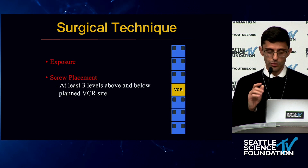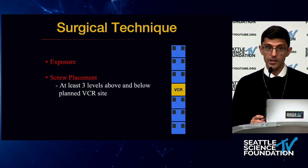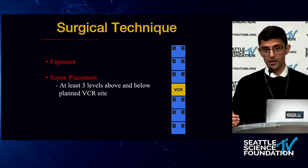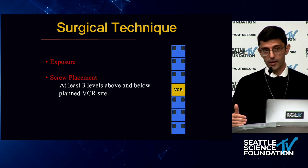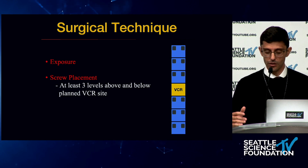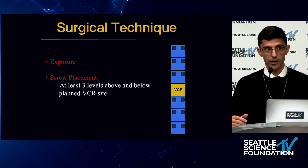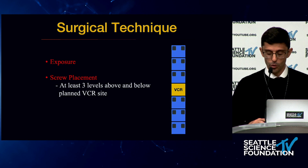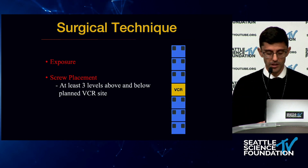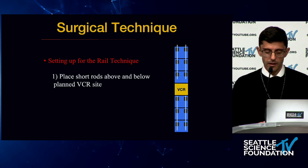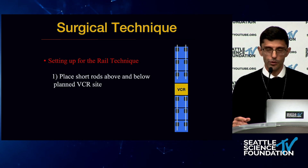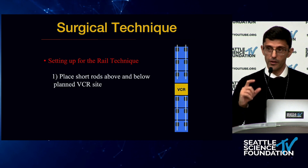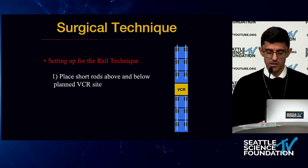After you expose and place screws above and below — say the patient has a prior surgery and it's a distal junctional failure — you don't necessarily need to expose everything. One benefit of this technique is that you connect into prior instrumentation. For a proximal extension of a construct, you set up for the rail technique by placing short rods above and below the planned osteotomy site.